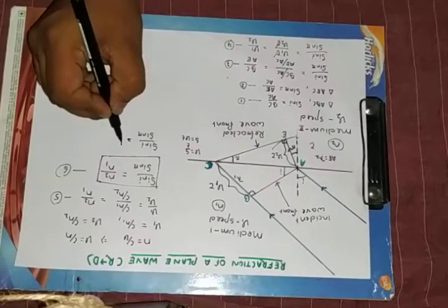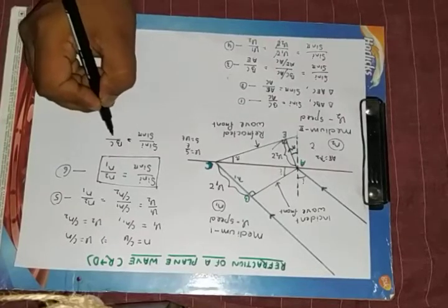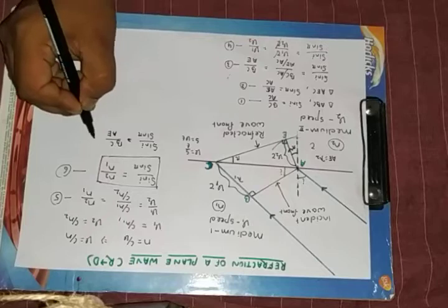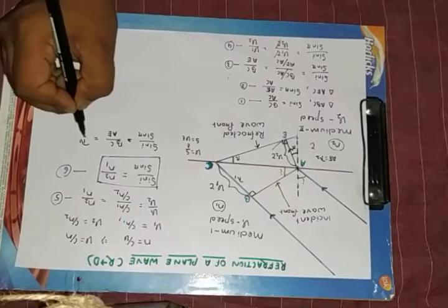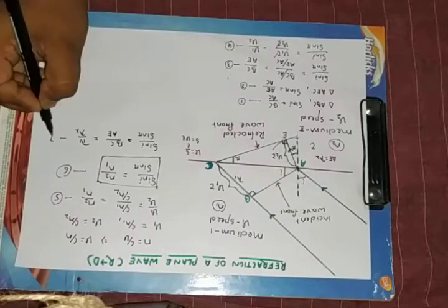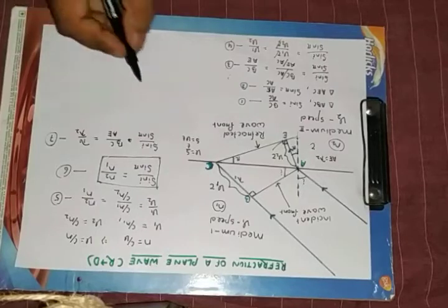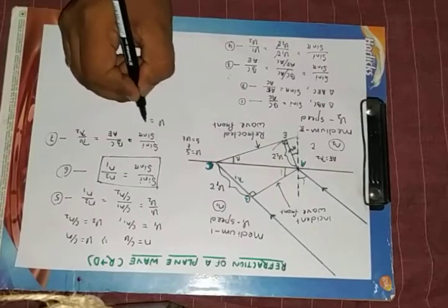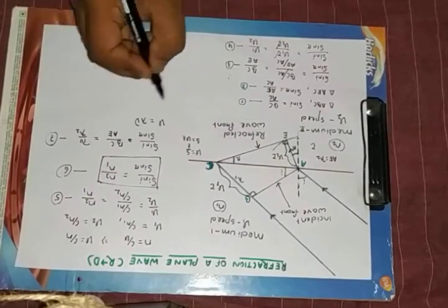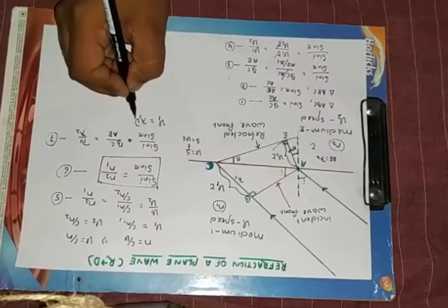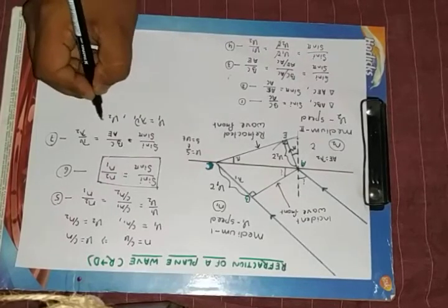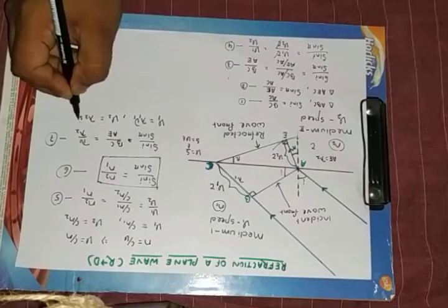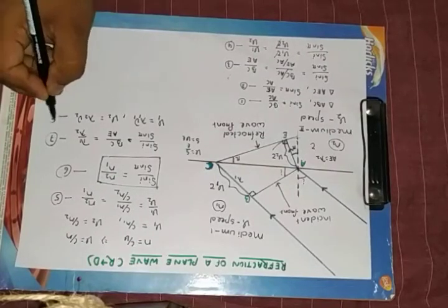equal to BC by AE, which is equal to lambda 1 by lambda 2. But we know v equals lambda times nu. That means v1 equals lambda 1 times nu 1, v2 equals lambda 2 times nu 2. So if I